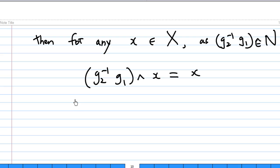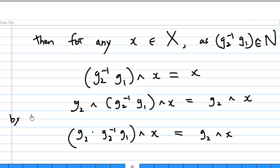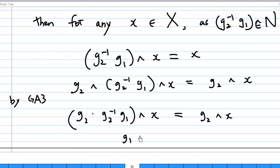Now, apply g2^ on both sides. Using group action axiom 3, this equals g2^(g2^{-1}g1^x) on the left-hand side, and equals g2^x on the right-hand side by GA3. But then, g2 times g2 inverse is E, E times g1 is g1, so we have g1^x equals g2^x.